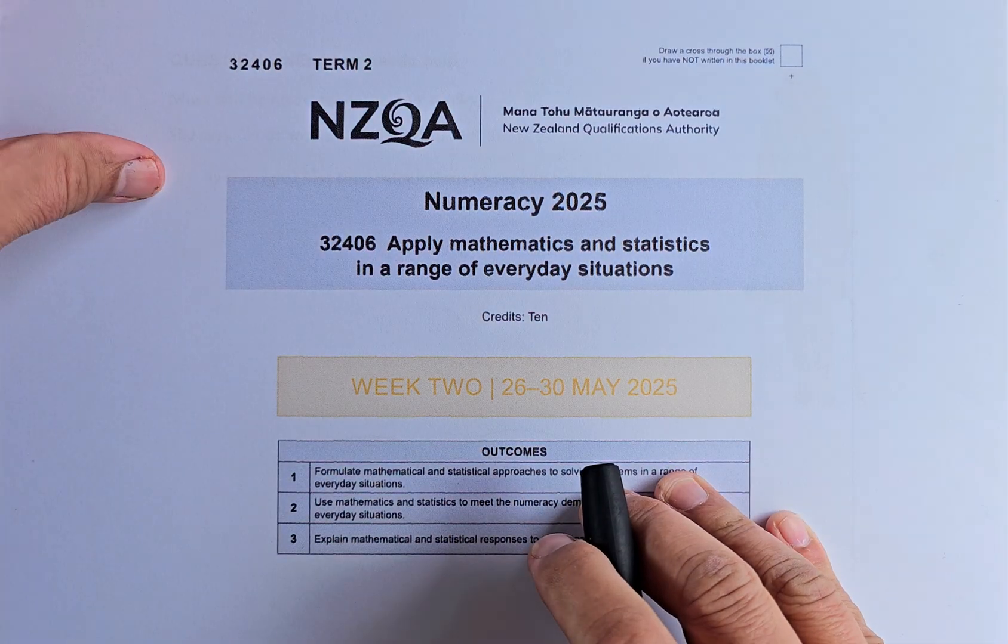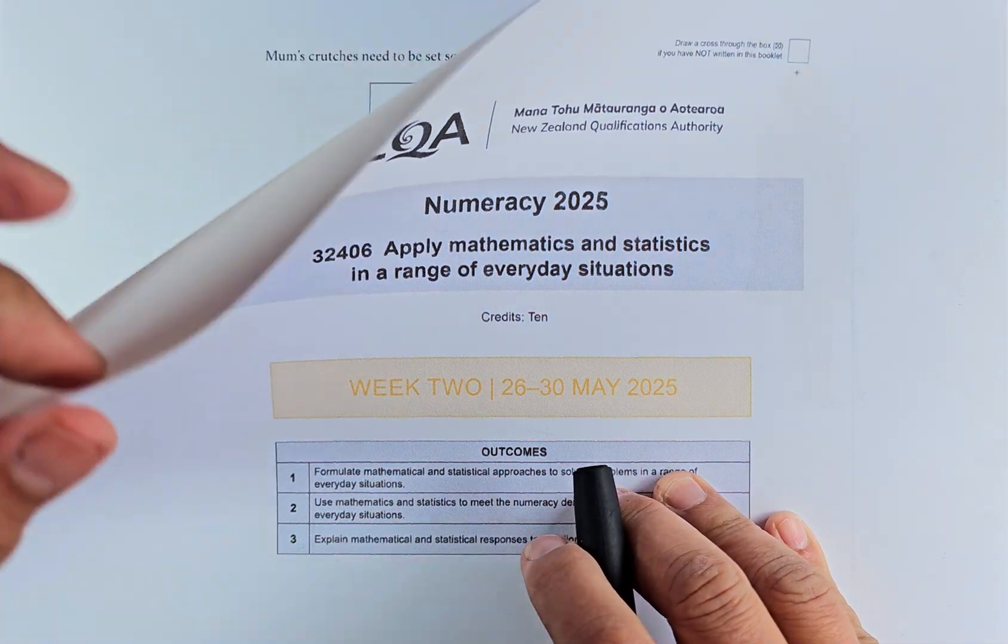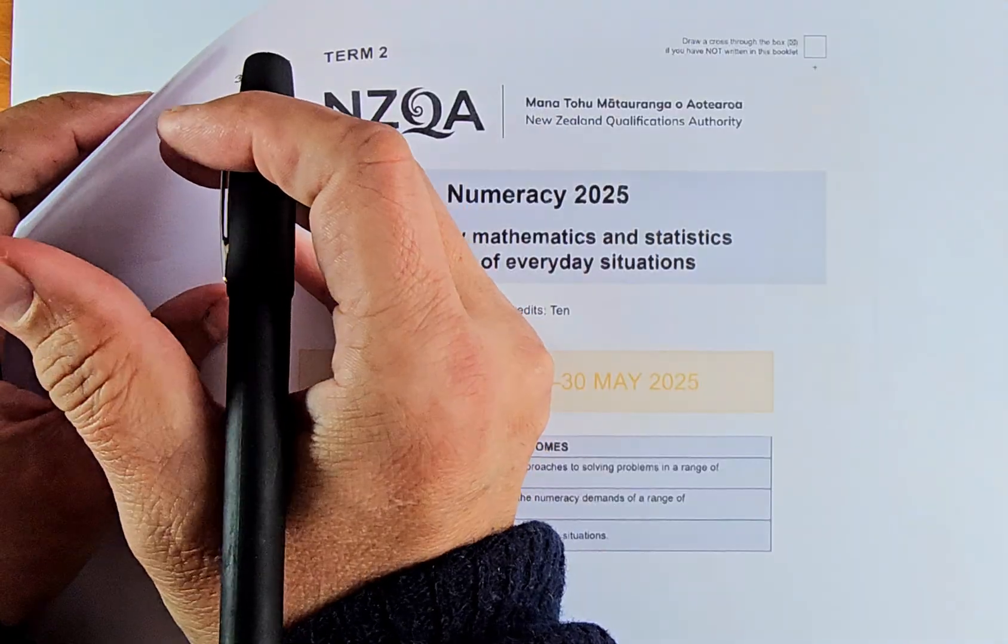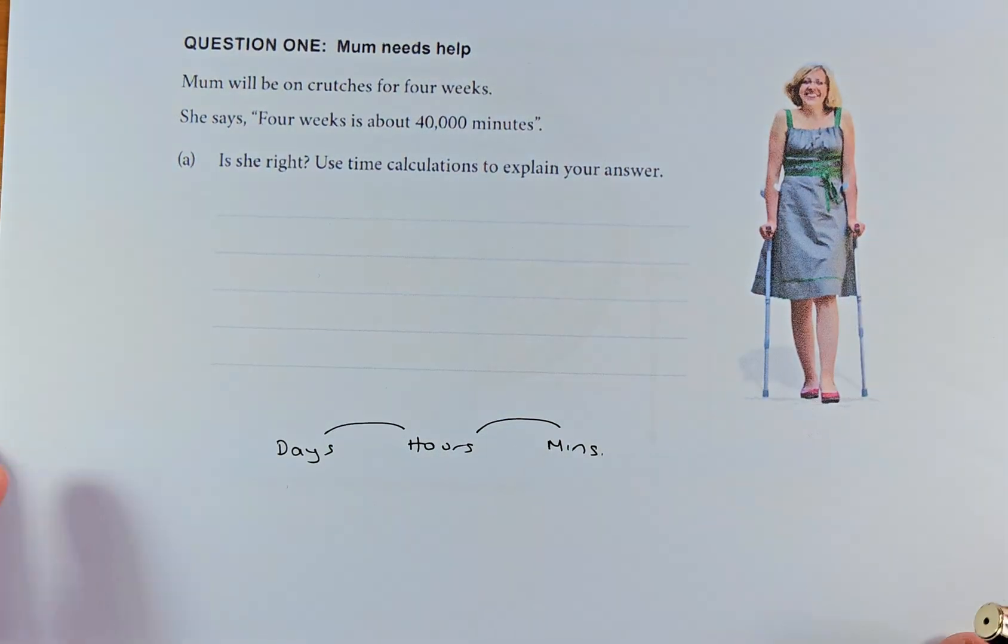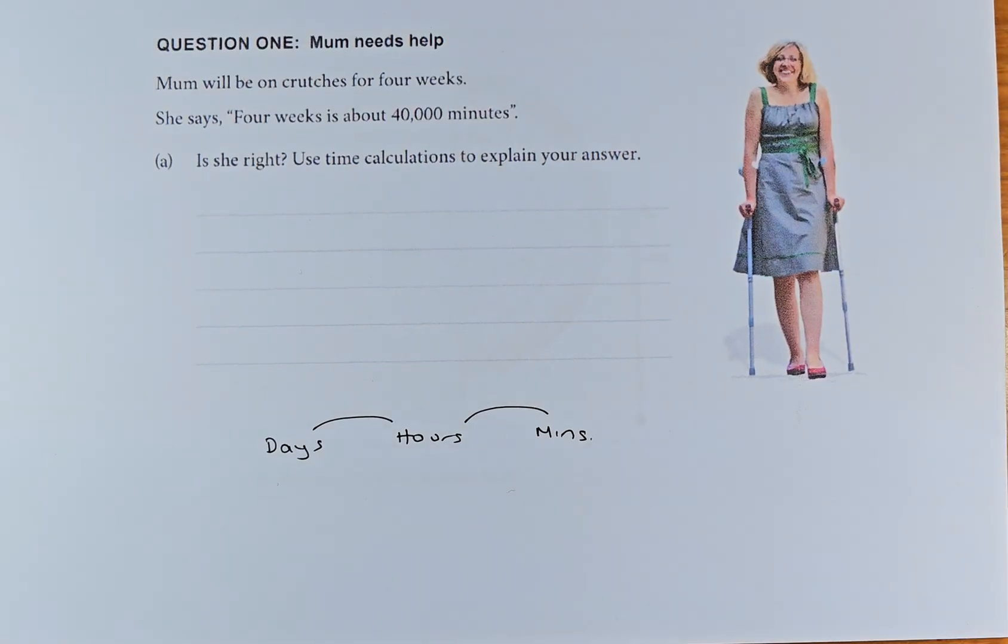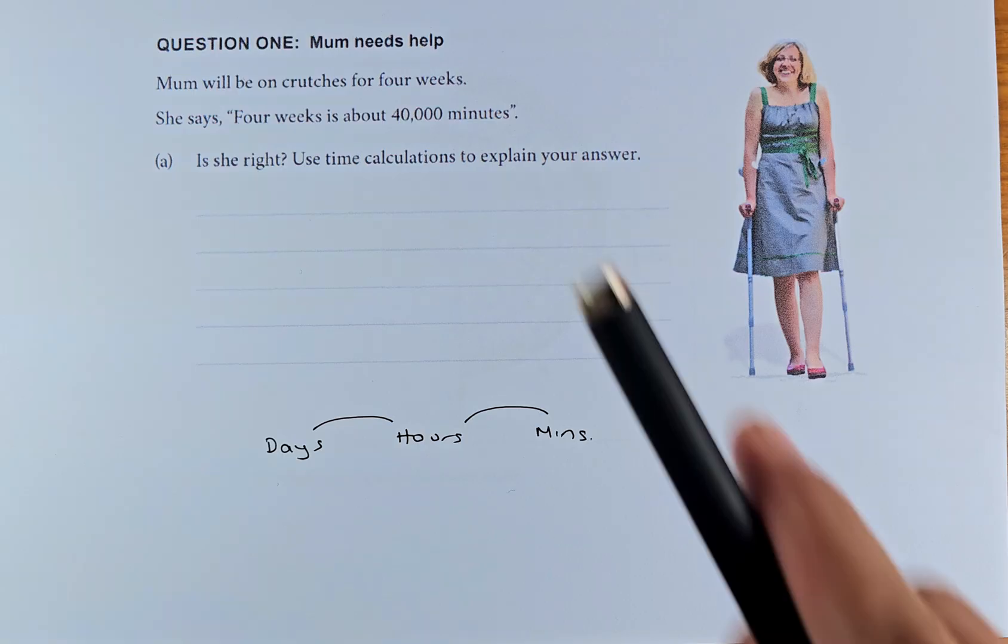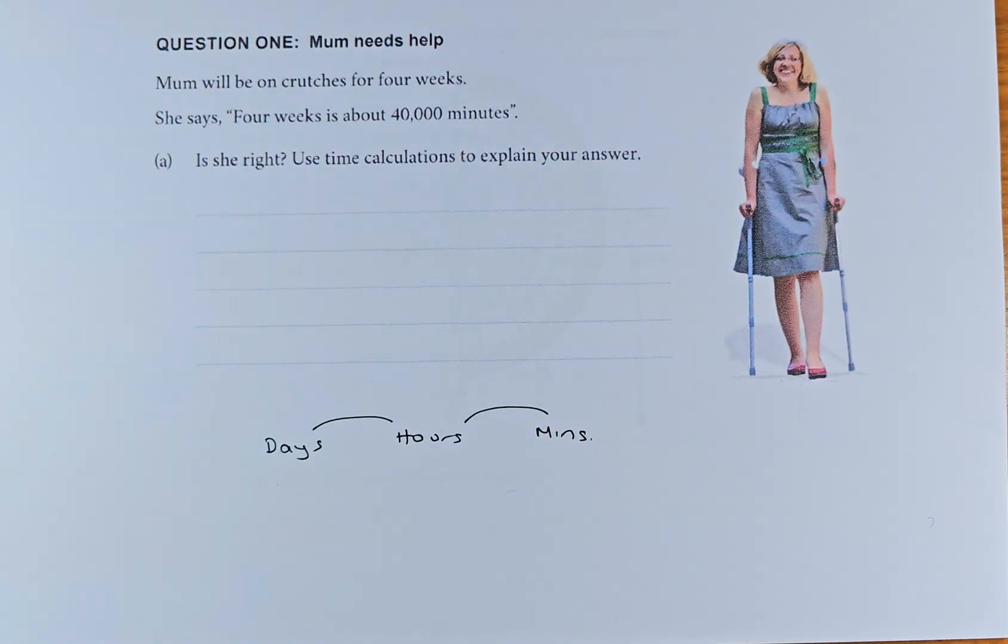Question 1a sounds like this. They say mom needs help, mom will be on crutches for four weeks. She says four weeks is about 40,000 minutes. Is she right? Use time calculations to explain your answer. So you need to know the conversion - days, hours and minutes. We're not interested in seconds, so we will ignore the seconds.